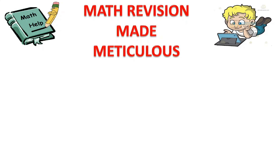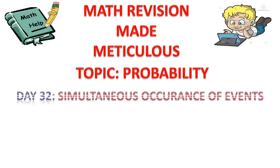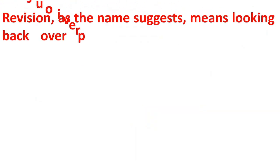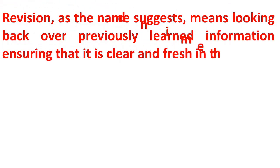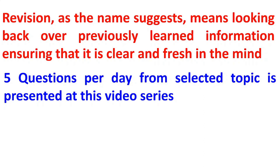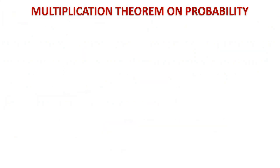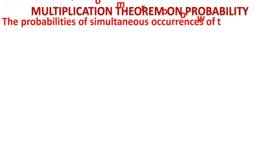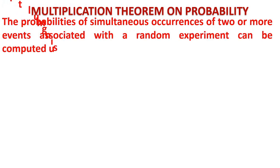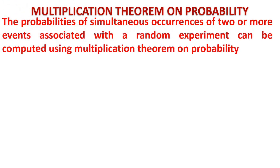Welcome back to MAGTH Revision Made Meticulous. Topic: Probability, Simultaneous Occurrence of Events. Revision means looking back over previously learned information, ensuring that it is clear and fresh in the mind. Five questions per day from a selected topic are presented in this video series. The steps in answers are supported by the ideas used for getting the answer. Now let us look at the Multiplication Theorem on Probability. The probabilities of simultaneous occurrence of two or more events associated with a random experiment can be computed using the Multiplication Theorem on Probability.